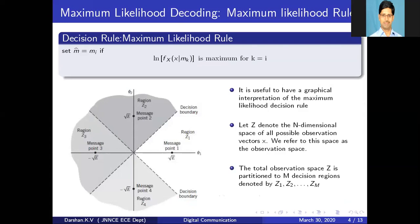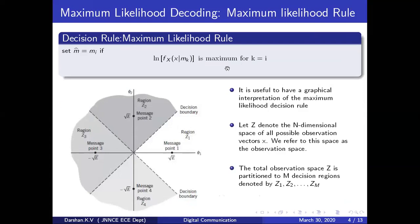For the decision rule, this metric would be evaluated for all messages: ln of f_X(x | m_k). For a particular message, if the metric is maximum, then that message would be treated as the transmitted message. So this was the logic.